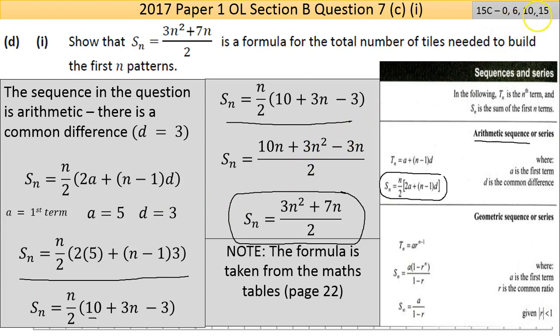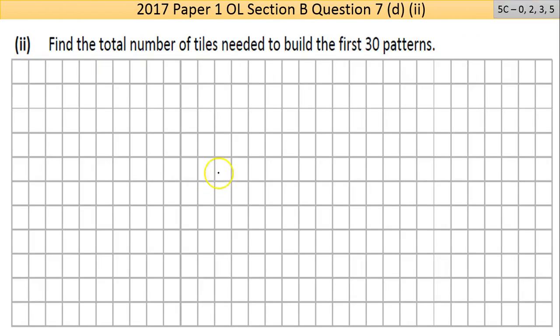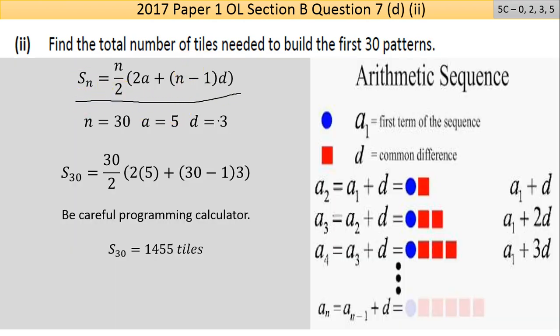D part 2 says find the total number of tiles needed to build the first 30 patterns. The answer here - I'm using the same formula again. This time we're told it's 30 patterns, we're trying to find the total number of tiles. A is still 5, and d is still 3, still the common difference. I put all my numbers in.